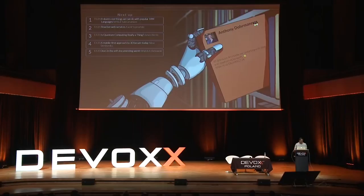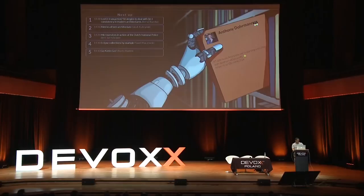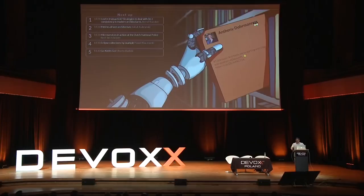We're going to talk about a dozen cool things we can do with JVM languages — covering Java 8, Groovy, Scala, and Kotlin. One of the things I really enjoy is being a polyglot programmer, using the tools that make sense for the task at hand. In our ecosystem we're not forced to use a particular language. I look at languages like vehicles — sometimes you ride a bicycle, sometimes you take a car or airplane.